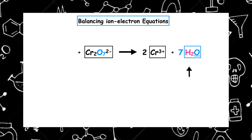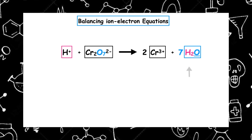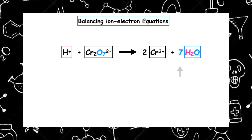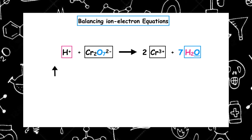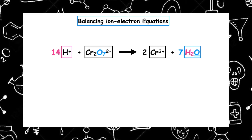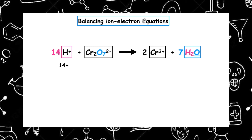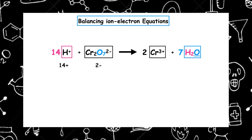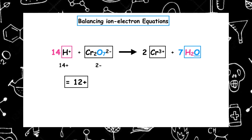On the right-hand side I've introduced the element hydrogen, which means on the left-hand side I have to add hydrogen ions. How many hydrogens do I have on the right? Two inside the box times seven outside gives me 14, which means I have to have 14 hydrogen ions to balance those out. For the overall charge: 14 plus from the hydrogen ions, and two minus for the dichromate, gives us an overall charge on the left-hand side of 12 positive.